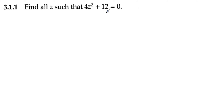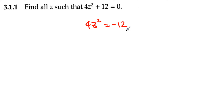Our first step would be subtracting 12 from both sides. Then we end up getting 4z² is equal to negative 12. When we divide by 4, we can see that z² must be equal to negative 3.